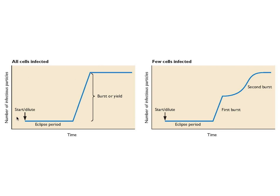On the left is a graph showing the results when he infected all the cells in a culture — putting in a lot of virus so every cell would be infected. Measuring with time the number of infectious particles produced, you can see that initially after adsorption and dilution, for a period of time he didn't detect any virus infectivity. He called this the eclipse period, because no infectivity could be detected.